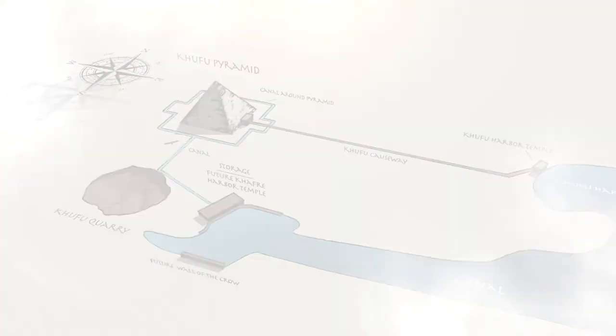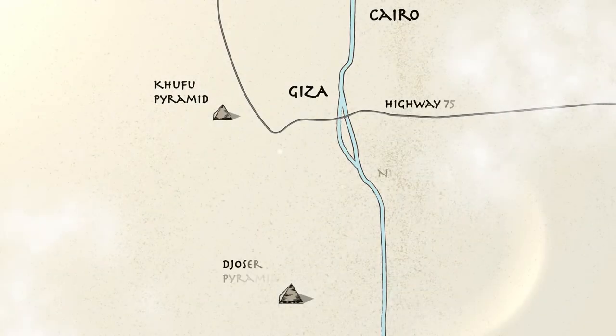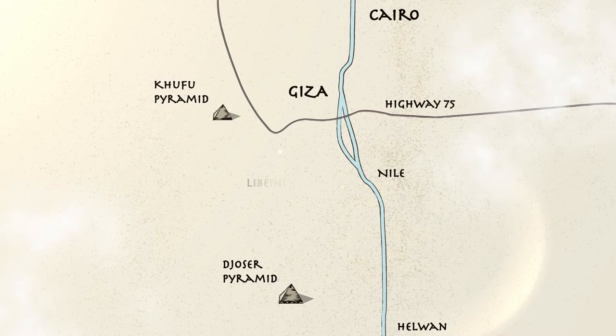Most scholars agree that over time, the Nile River has migrated eastward. The former Nile Channel, or Western Branch River, is now referred to as the Labini Canal. The Labini Canal is next to the Giza Plateau.